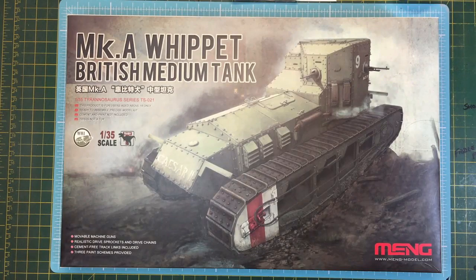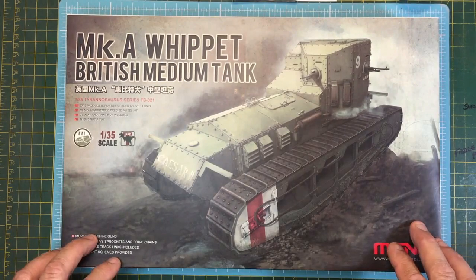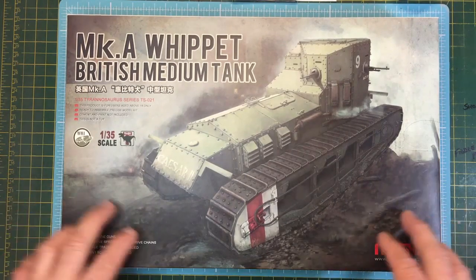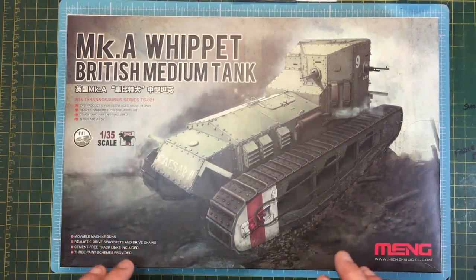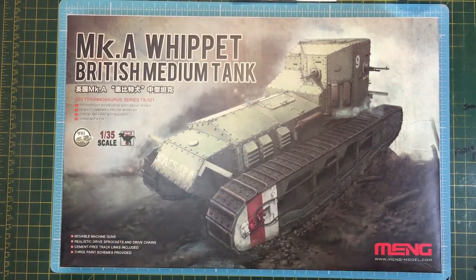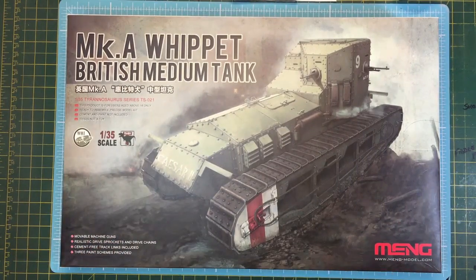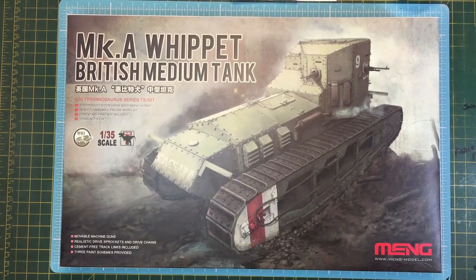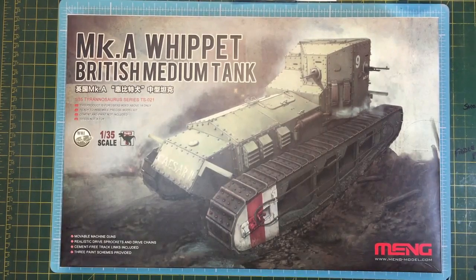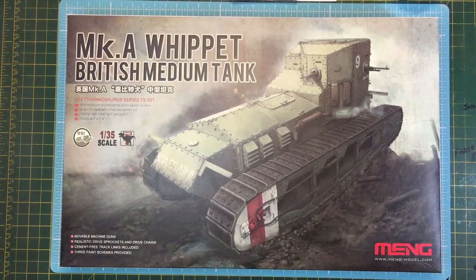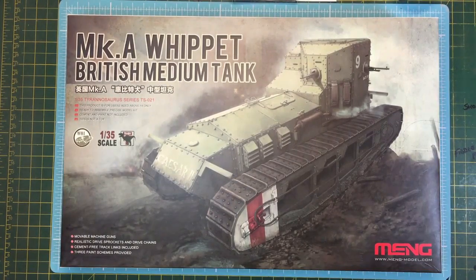Start off by saying three paint schemes provided is a bit strange because when you see the decal sheet there's all sorts on there. Yeah, keep watching when we get to there. It's a bit strange. Right, what have we got? We've got a kit with ten sprues of plastic, one bit of rope, a set of decals and instructions.